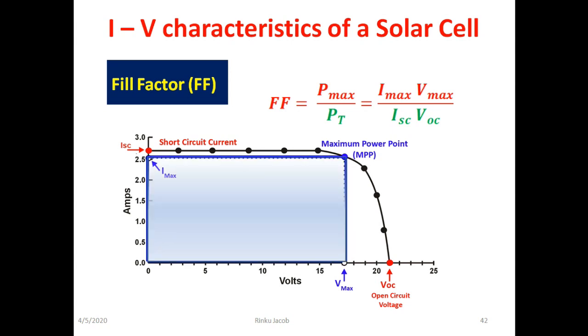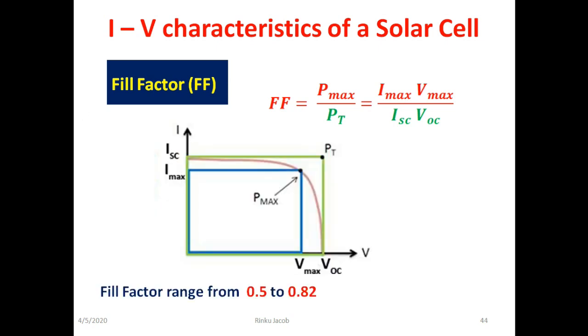Now we take the denominator term of the equation. In the denominator, it is the product of ISC and VOC. So on the graph, ISC and VOC are the two lengths shown in green color. Their product means it is the area of the rectangle shown here. So fill factor is the ratio of the area of the rectangles produced by the real power and theoretical power. In other words, fill factor gives information about how much area is being filled in real situation compared to the theoretical or ideal area on the IV curve.